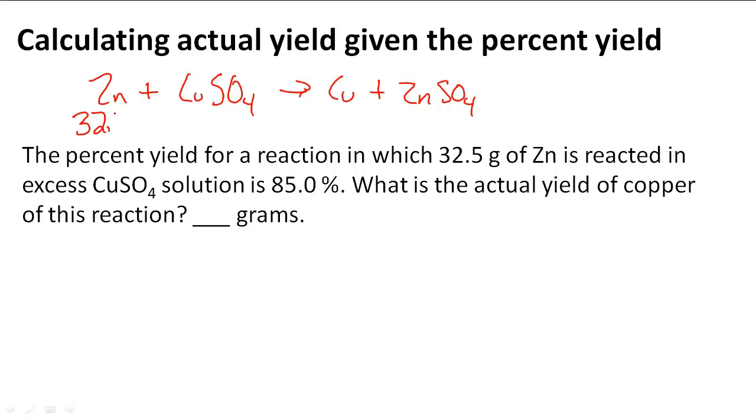We have 32.5 grams of zinc and we have to find out how much Cu is theoretically made, and then we can find out how much was actually yielded.